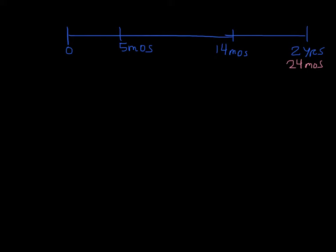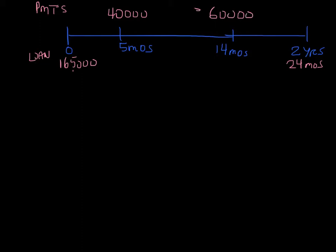So we'll mark the important dates on the time diagram. First of all, we've got a loan. The loan of $165,000 is taken out today, so I'm going to place it in the bottom part of the time diagram. We make payments of $40,000 and $60,000 at the end of 5 months and 14 months respectively — $40,000 at 5 months and $60,000 at 14 months. Our final payment is to be made at 2 years, so we'll put X dollars at the 2-year period.